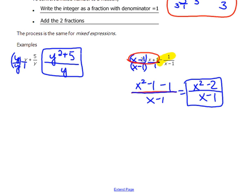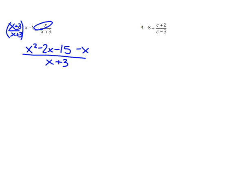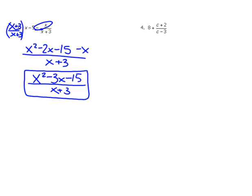Pause here and try examples three and four on your own, then come back and check your answers. For example three, I multiply the first term by x plus three over x plus three to get a common denominator. Multiplying those two binomials gives x-squared minus two x minus fifteen, then I still have the minus x. Combining like terms gives x-squared minus three x minus fifteen, all over x plus three, and that cannot be factored further.